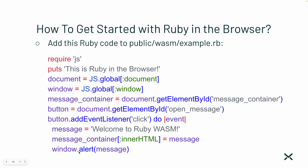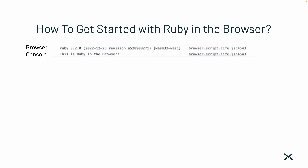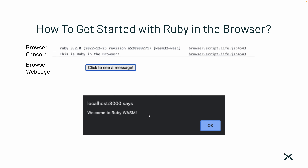Then I grab a button and add an event listener for the click, which is equivalent to adding an onclick event on a button in HTML. I build the message, put it in the message container, and call window.alert with the same message. When I load the page, the browser console will show the Ruby version that was loaded and say 'This is Ruby in the browser.' I'll see the button in the web page — when I click it, I get the alert saying 'Welcome to Ruby Wasm.'